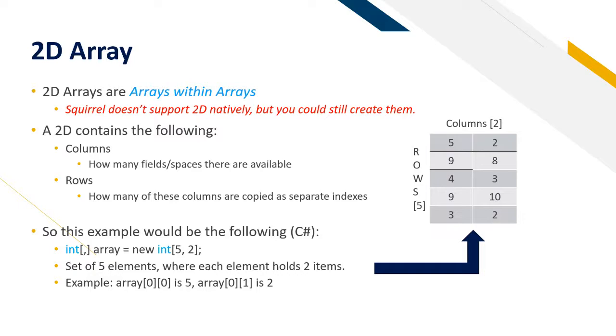This example would be the following in C sharp, since C sharp supports 2D arrays natively. We declare a 2D array in C sharp with a comma within the array brackets. Then after declaring it you'll need to specify new int 5 for how many rows there are going to be and 2 for how many columns there's going to be for each row. In English terms this represents a set of 5 elements where each element holds 2 items. So if you target array[0][0] that is 5 and if you target array[0][1] that is 2. Remember that the maximum length is always n minus 1. So to access row number 5 you have to specify row number 4. If you specify 5 in the index you've gone over the maximum element which can cause issues with the program.